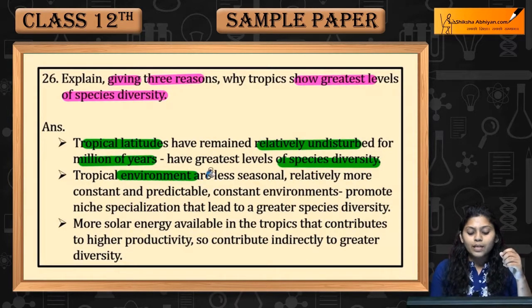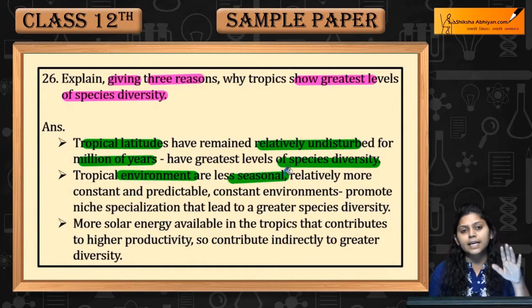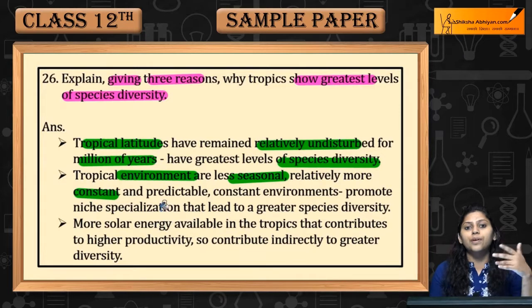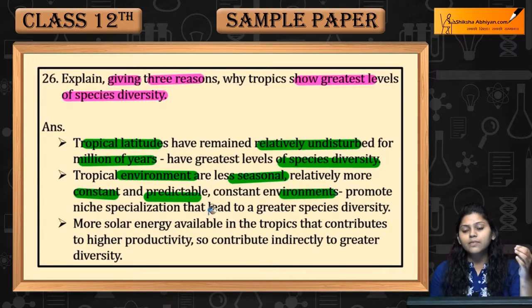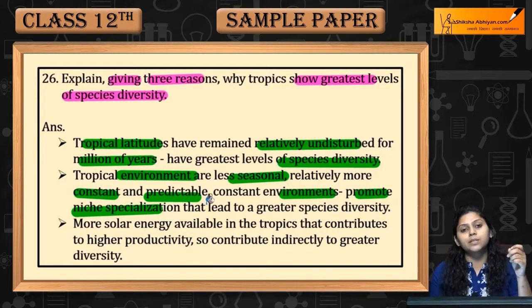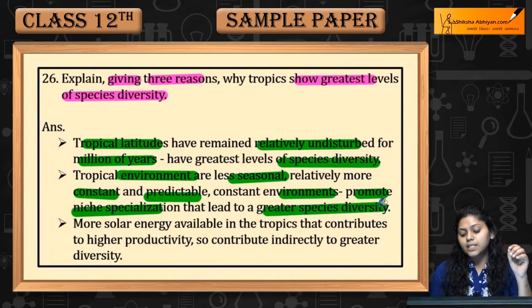Tropical environment is less seasonal, relatively more constant and predictable, which promotes niche specialization, which in turn causes more species diversity.